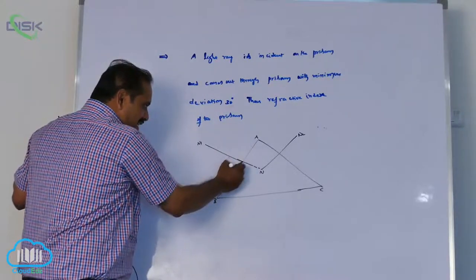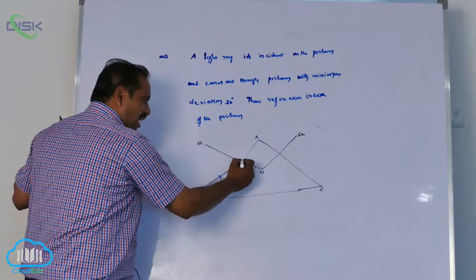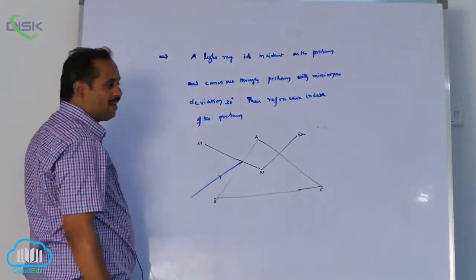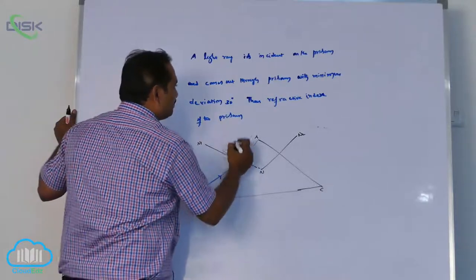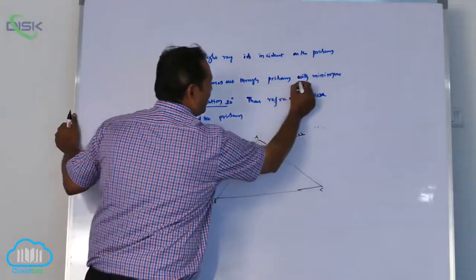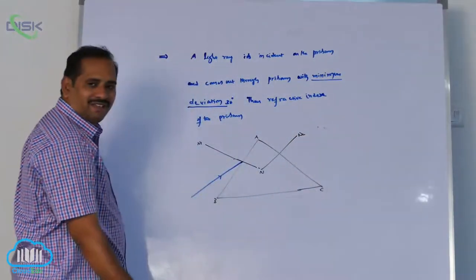Light is incident on the surface like this, incident on the prism and it comes out through the prism with minimum deviation. Very very important thing - underline this point. Minimum deviation means...